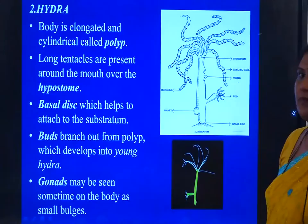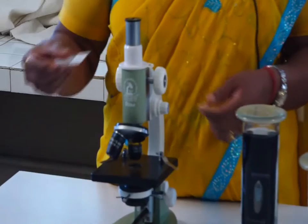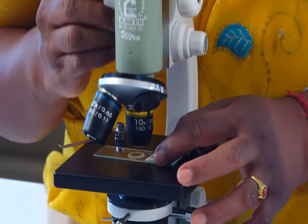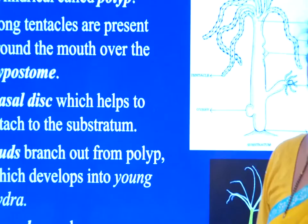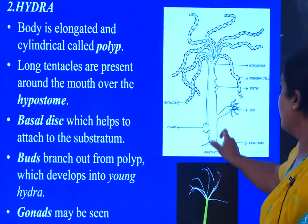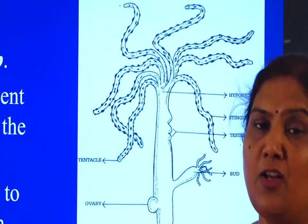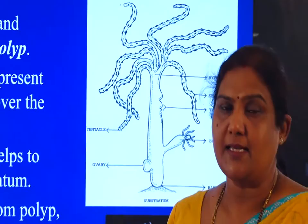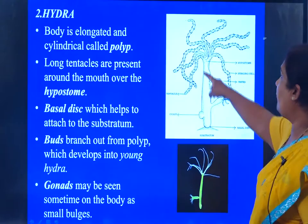Moving to the next specimen: hydra. We have hydra on a slide, focused under the microscope. Hydra is a cylindrate member belonging to the phylum Cnidaria. Hydra is also a freshwater form. It has a cylindrical structure just like a flower, so we say it's a polyp form. Cnidarians have two body forms: polyp and medusa. Hydra is a polyp-like structure with long tentacles present around the mouth.